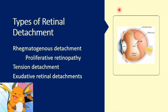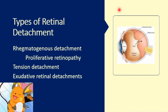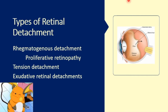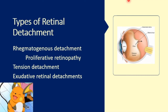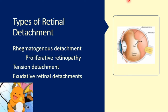Traction retinal detachment involves a pulling force coming from the vitreous humor or vitreous space. The ophthalmologist must identify and release the scars or bands of fibrous material that provide traction on the retina. This fibrous scar tissue pulls parts of the retina, causing the traction detachment. It is common in diabetic retinopathy, vitreous hemorrhage, and retinopathy of prematurity.